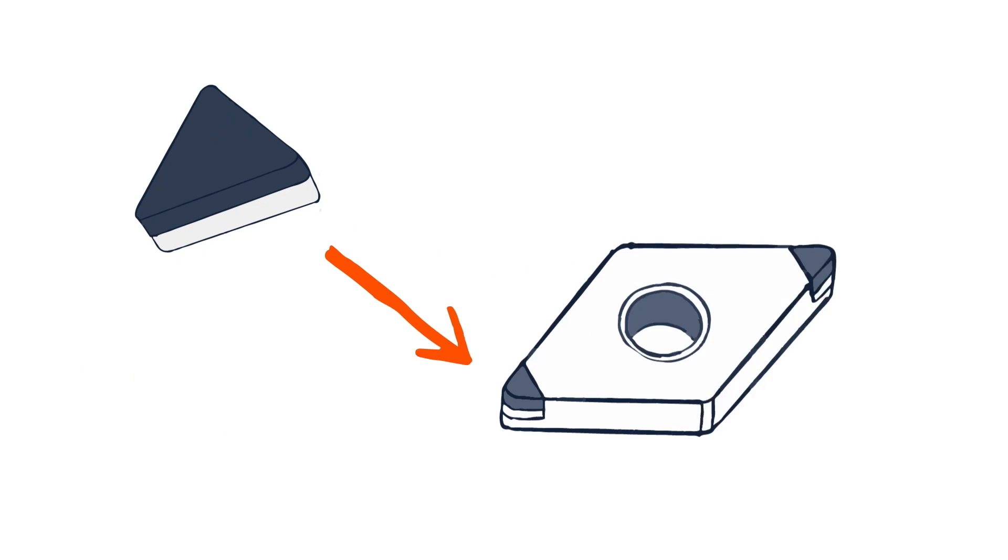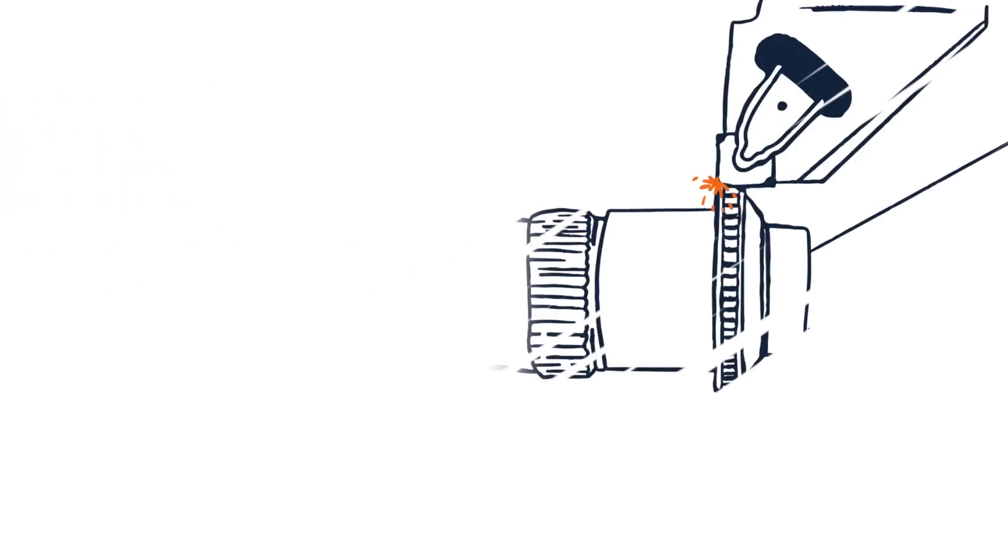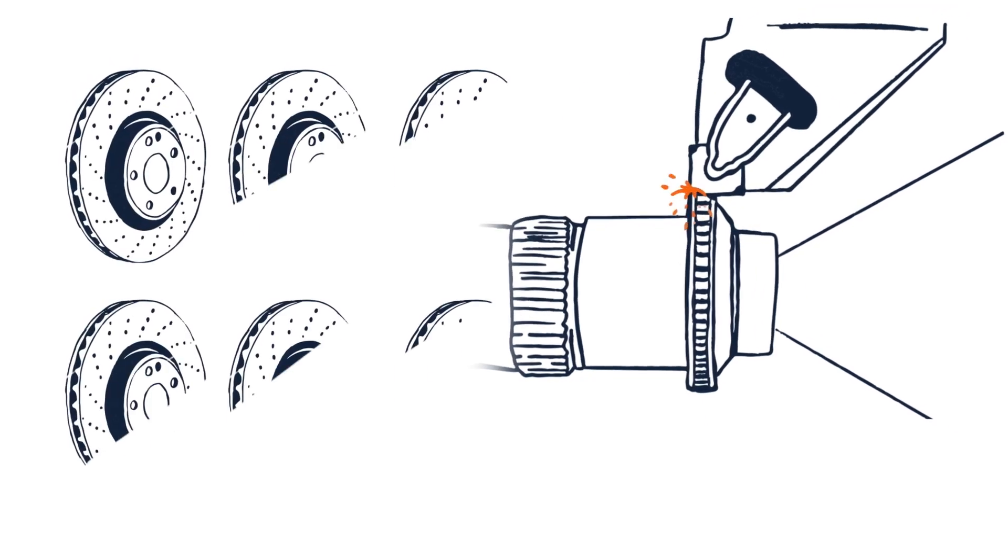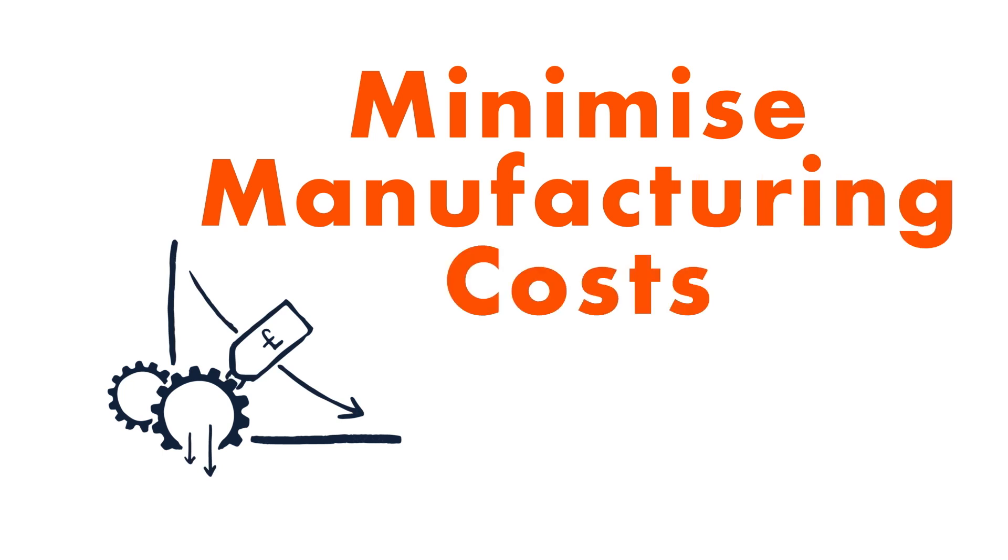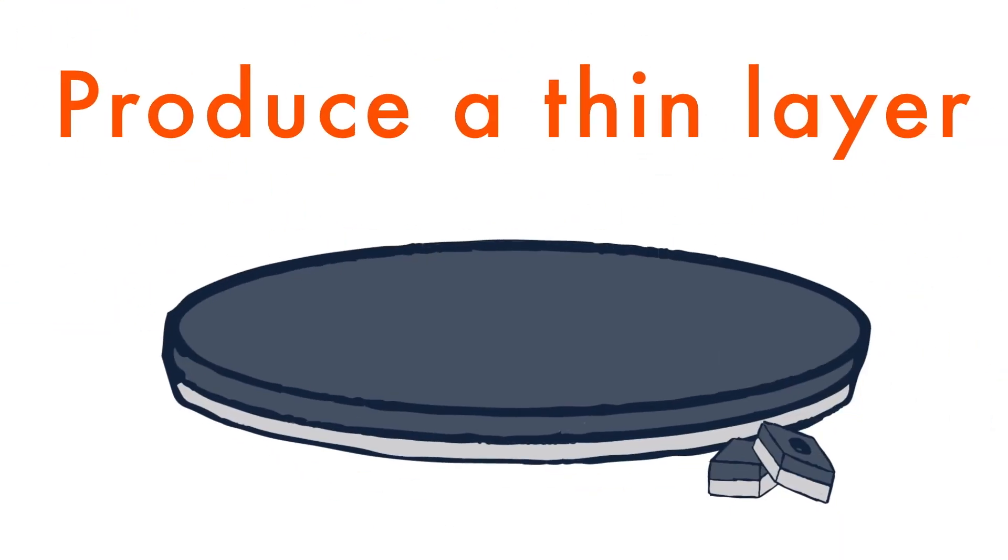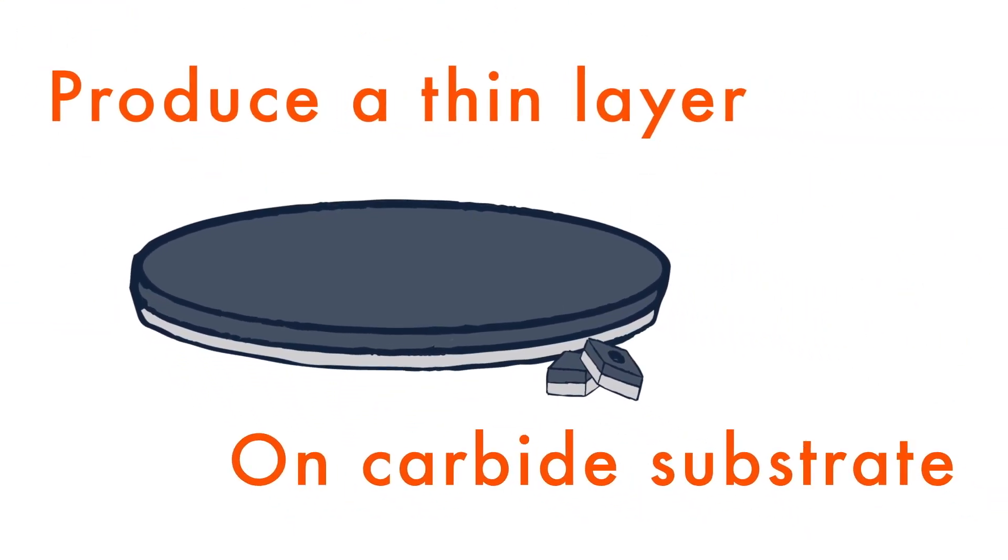After finished grinding and coating, their customers can then use these tools to machine hundreds of pinions or thousands of brake discs at high speed. To reduce manufacturing costs, we have typically produced a thin layer of PCBN on a carbide substrate.